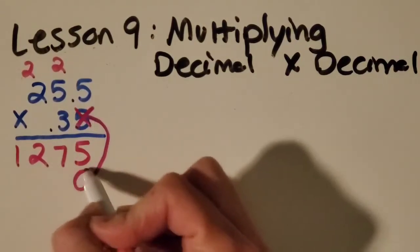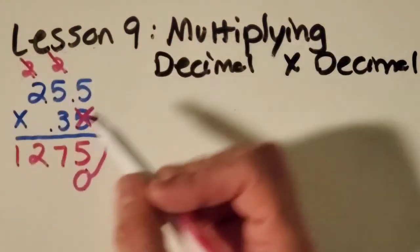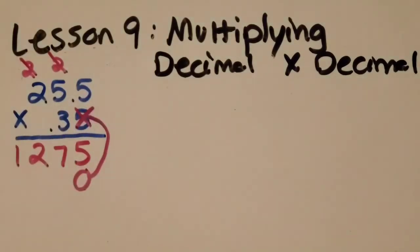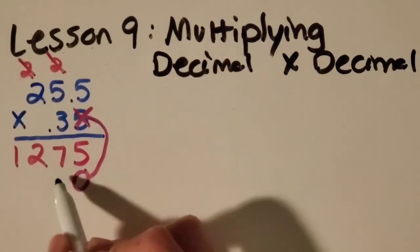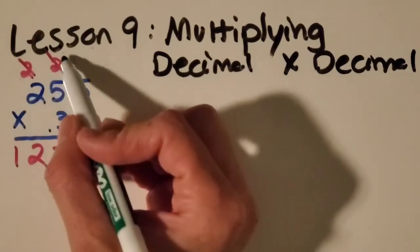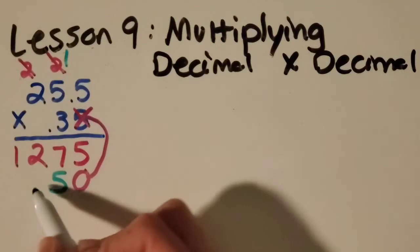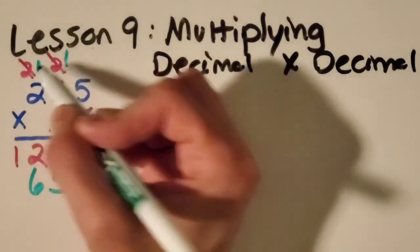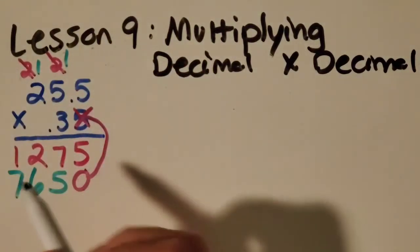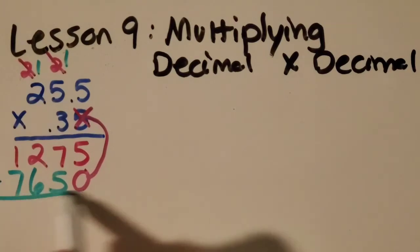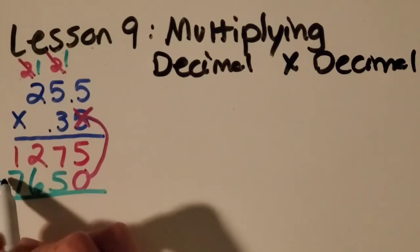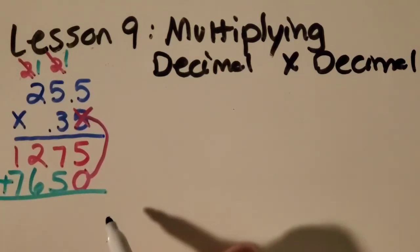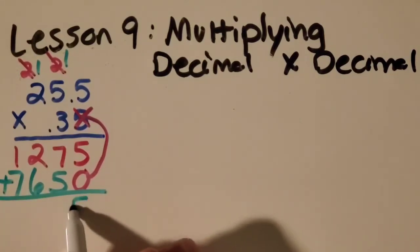Don't forget XO no go and then everything times three. And we're going to add our two partial products. Remember we can wait on the decimal.